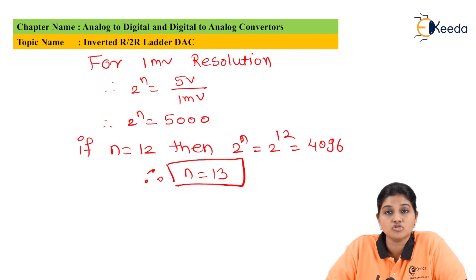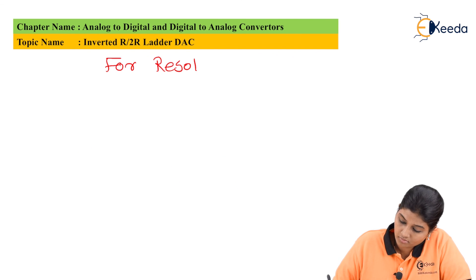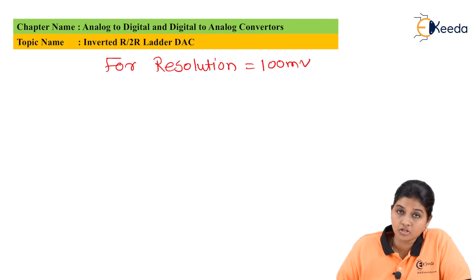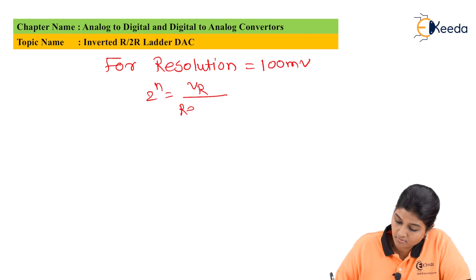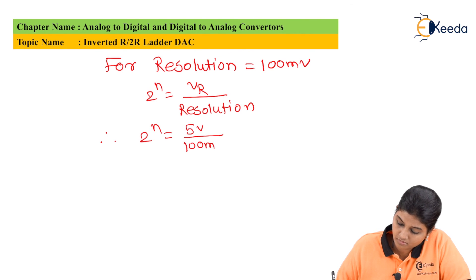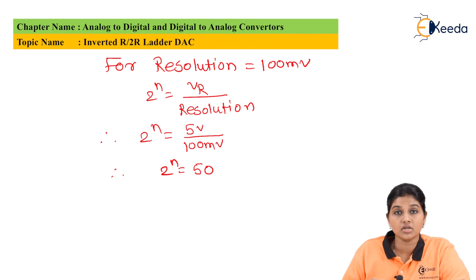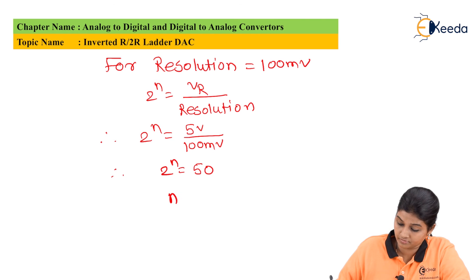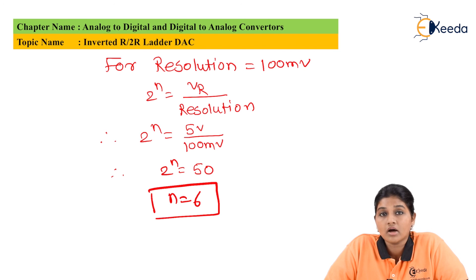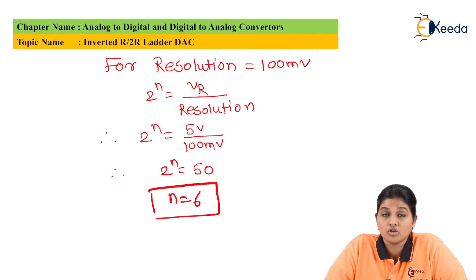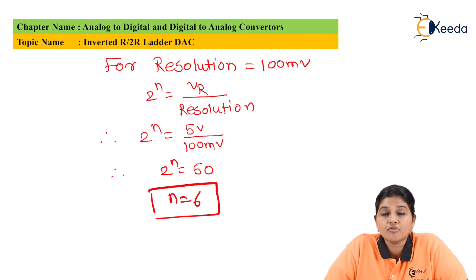Now let's find the number of bits for a resolution of 100mV. Using the same formula, 2 raised to n equals 5V divided by 100mV equals 50. Therefore, we consider n equals 6. This is how we can design an R2R ladder and find out the number of bits required for a given resolution. I hope you understood the topic of inverted R2R ladder. Thank you very much for watching this video. Stay tuned to Ikira, subscribe Ikira. Thank you.